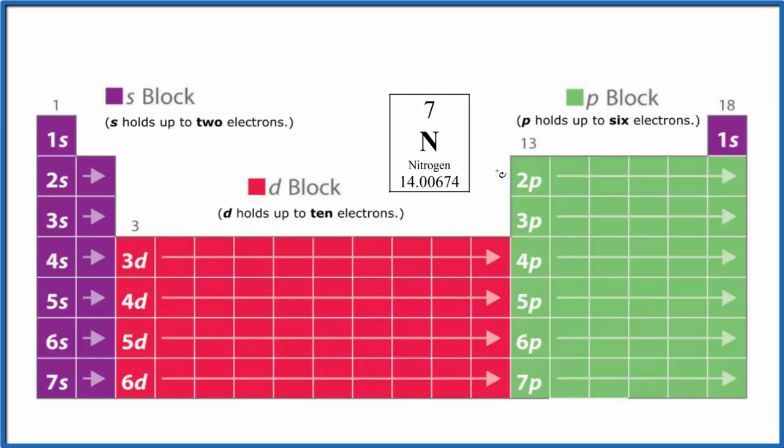Let's do the electron configuration for nitrogen. Nitrogen has an atomic number of seven, so that means it has seven protons, and since all these elements on the periodic table are neutral, it has seven electrons as well.